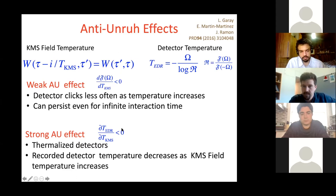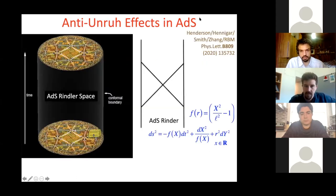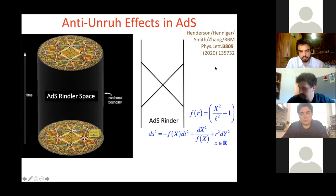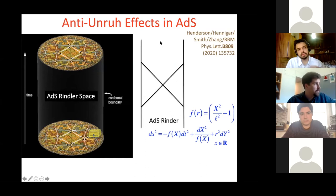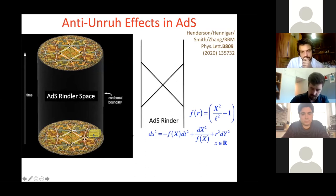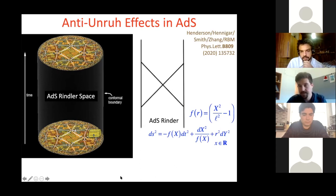The weak anti-Unruh effect is where the detector clicks less often as the temperature goes up — and they found this can persist for arbitrarily long interaction times. The strong effect is where the rate of change of the EDR temperature with respect to the KMS temperature is negative, and this happens for thermalized detectors. It means the recorded temperature as given by your device goes down as the KMS field temperature goes up — as though your thermometer reads colder as you feel it getting hotter.